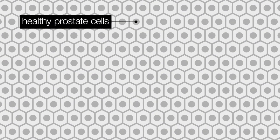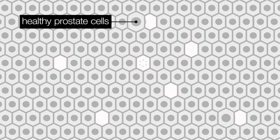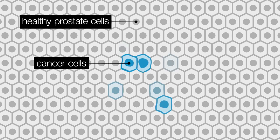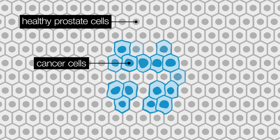The prostate is made up of thousands of tiny cells. Normally, when cells grow old or become damaged, they die. Healthy cells divide to make new cells and replace them. But cancer cells are different. They don't die like normal cells, and they keep dividing into more cells.